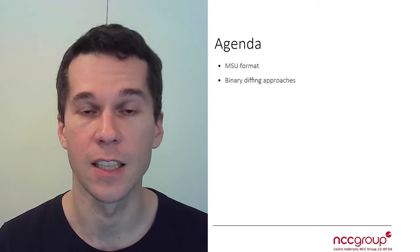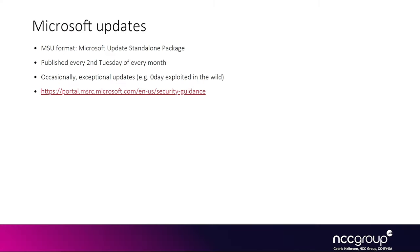Microsoft updates are in the MSU format, which stands for Microsoft Update Standalone Package. We often refer to the updates as Patch Tuesday because they release the new version of Microsoft products every second Tuesday of the month. Microsoft also uses the term KB, which stands for Knowledge Base, followed by a number that uniquely identifies a particular update. Microsoft does release exceptional updates — for instance, if a zero-day was exploited in the wild — usually only for critical vulnerabilities that can be exploited remotely.